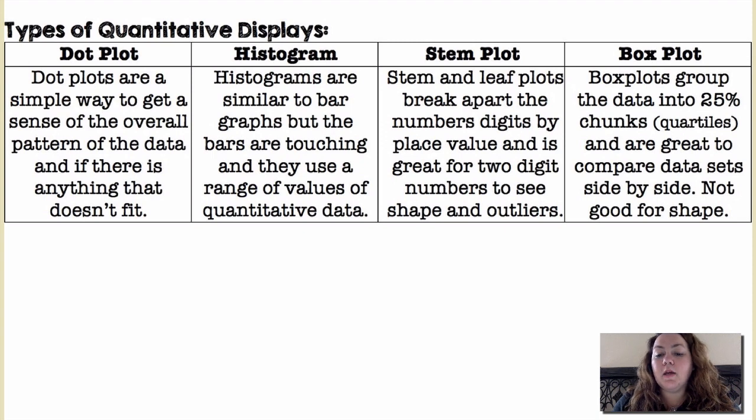A stem plot, also called a stem and leaf plot, breaks apart the numbers digits by placing like the tens place and then the ones place or the hundreds place and then the ones place. It's always like a single digit usually on the leaf side but it breaks it up by place value and it's great for two digit numbers to see the shape and outliers and still have the actual numbers, whereas in a histogram you don't always know the actual numbers, you just kind of know that I have this many in this category.